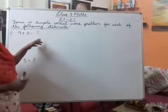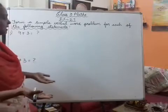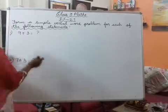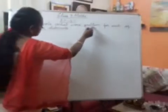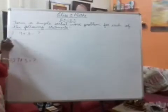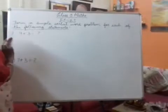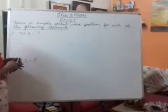that is 9 plus 3 equals question mark. What do you have to do? You have to frame the word problem. Okay, the question is, form a simple verbal word problem for each of the following statements. Okay, so first one, 9 plus 3 equals question mark. Simple example idea. Okay,